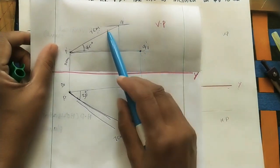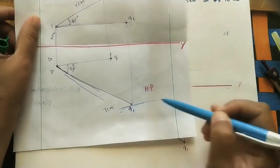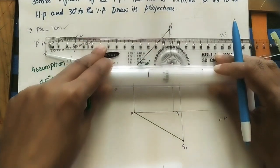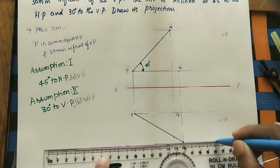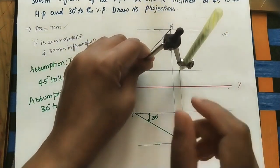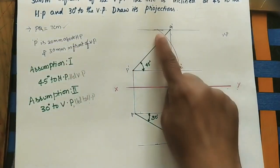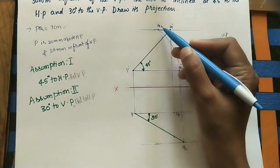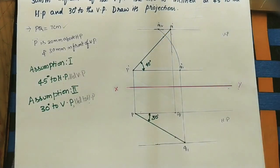After getting q' and q1', draw the locus of q point — in the front view it looks like a horizontal line, and similarly in the top view. To get the final front view, use a compass to take the length from p' to q' and draw an arc up to the locus of q. The intersection point is q2'. Join p' to q2' — this is the final front view.